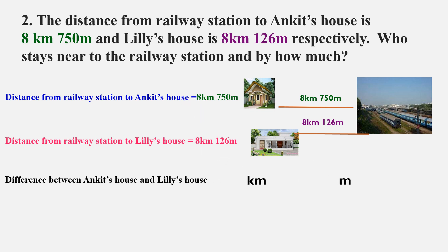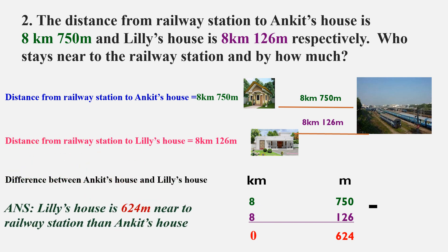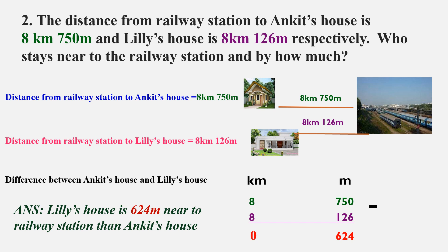We write kilometers and meters in separate columns: 8 under kilometers and 750 under meters, then 8 under kilometers and 126 under meters. Put the minus sign and start from the right side. You will get 624 meters. So Lily's house is 624 meters nearer to the railway station than Ankit's house.